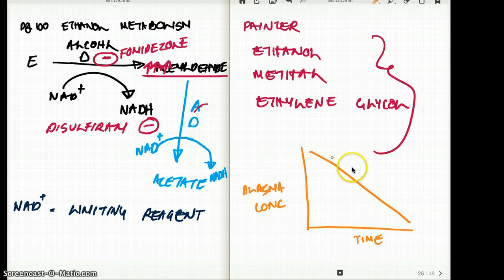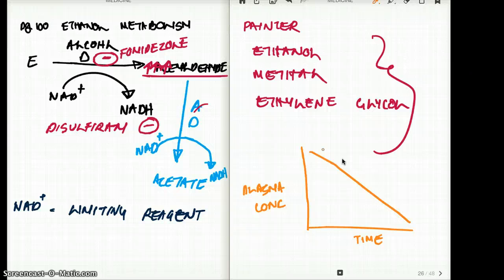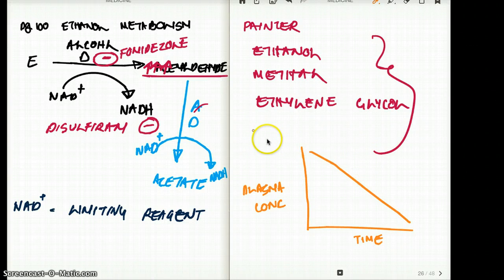Zero order kinetics looks like this. It's a straight line because it's an exact amount that you can get rid of in a certain amount of time, and it does not change whether you have greater or lesser concentration. That's why when you have a hangover, you just have to wait it out because no matter what you do, all you can do is hydrate yourself. It will be excreted in its due time. That is zero order kinetics.